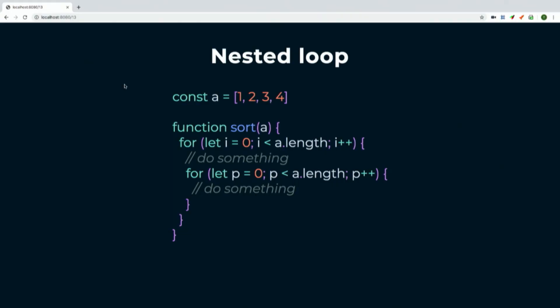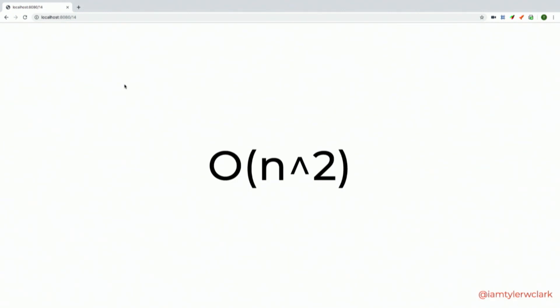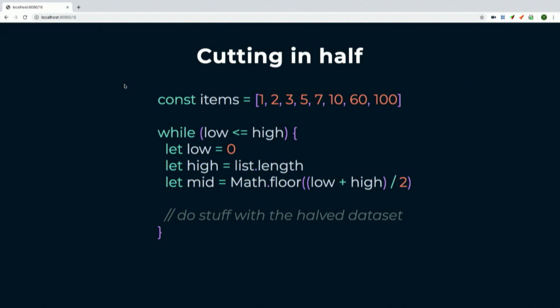Most sorting algorithms today involve some type of nesting of loops, because you have to go back through a list and figure out if one item is bigger than the previous. Each outer loop runs a full inner loop, so the runtime grows exponentially. The Big O notation for an algorithm with two nested loops is O(n²). With a third nested loop it would be O(n³) — it grows really fast and is not very performant.